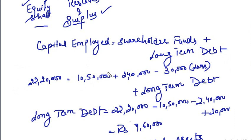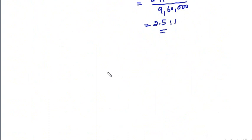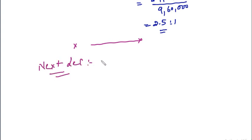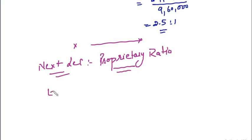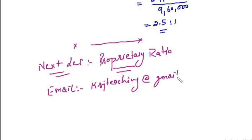This is all about the total assets to debt ratio. In the next lecture we will move on to the next solvency ratio — the proprietary ratio. If you have any queries, send an email at ksjteaching@gmail.com. Thank you so much.